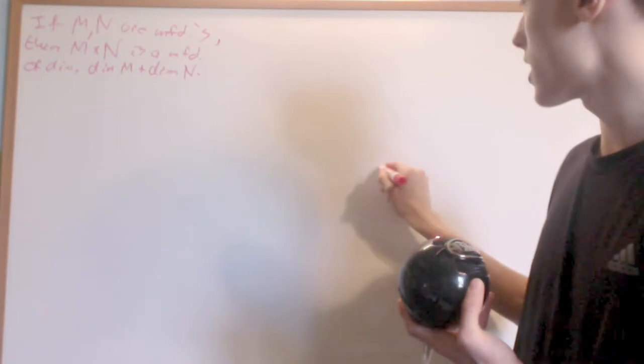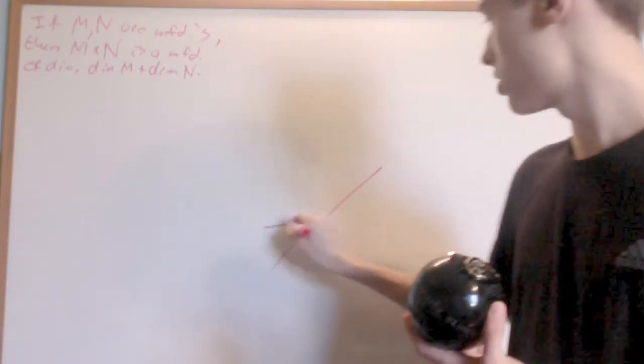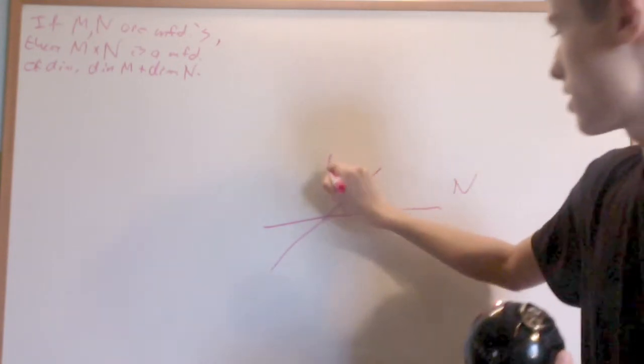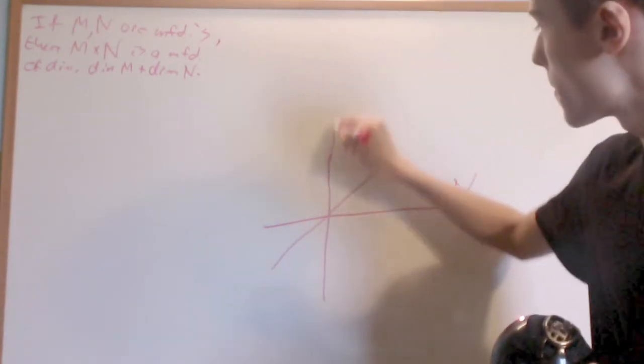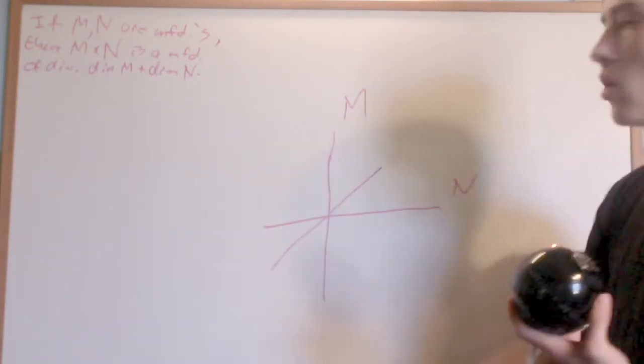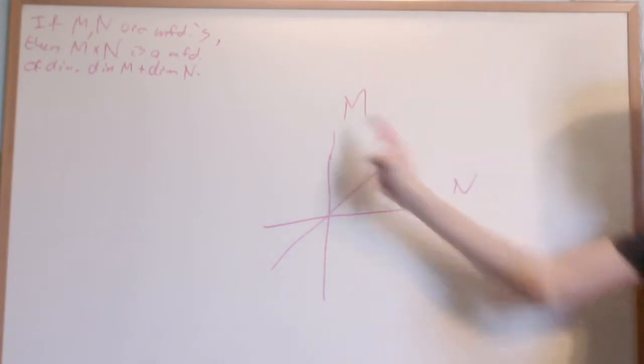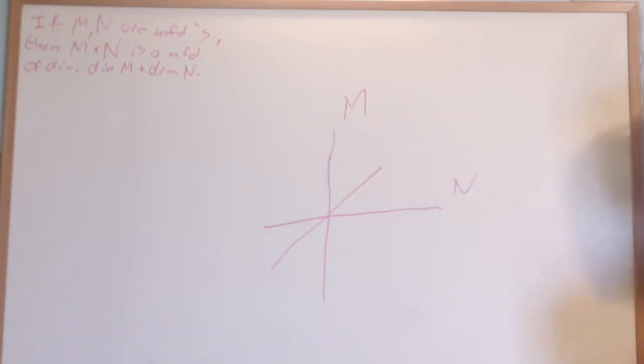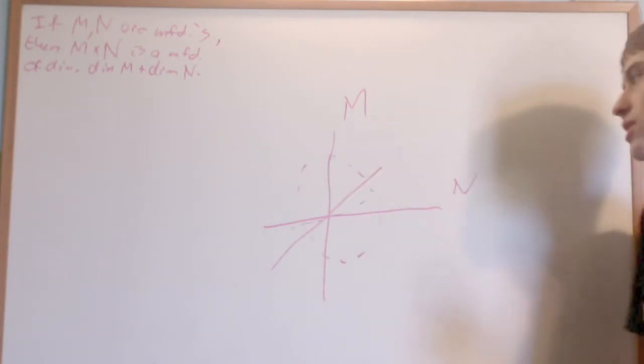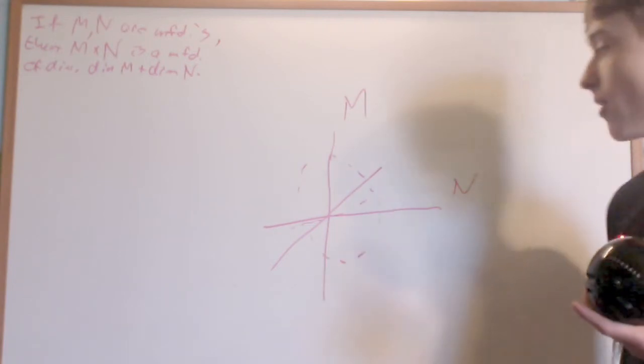The intuition here is that if I have one manifold, say this two-dimensional manifold N, and another manifold M, and I look at their product space, all of the pairs of points with one coordinate in M and one coordinate in N, this is still going to be a manifold of the sum of their dimensions.